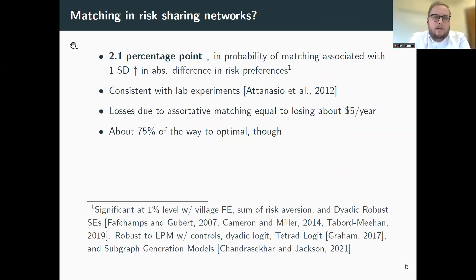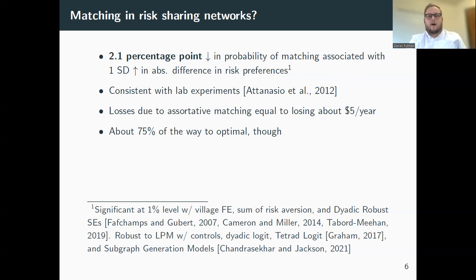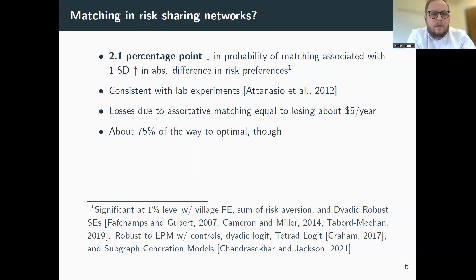When we take this to data, we see a 2.1 percentage point reduction in the probability of matching associated with a one standard deviation increase in the absolute difference in risk preferences. This is robust to many different specification choices, including adding covariates, and is also consistent with evidence from previous lab experiments. So we tend to believe the results.